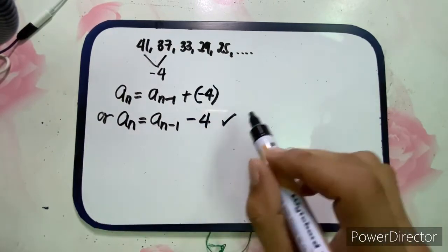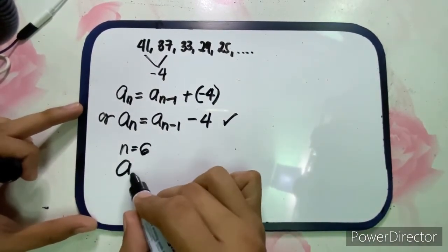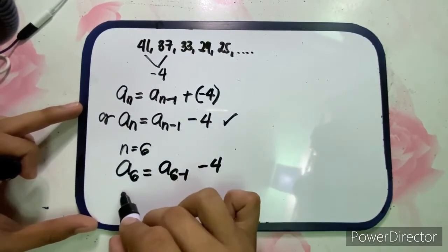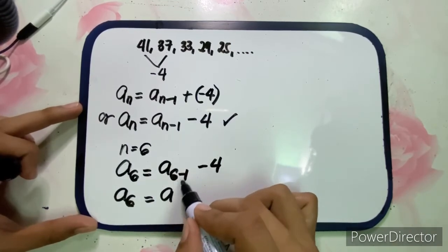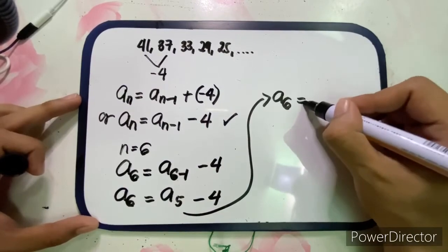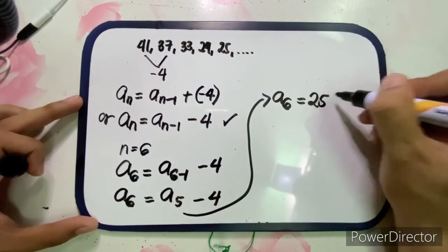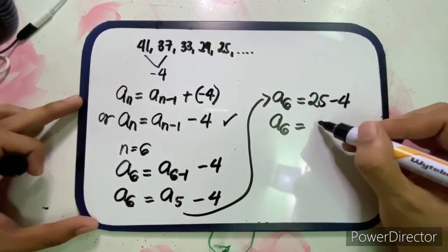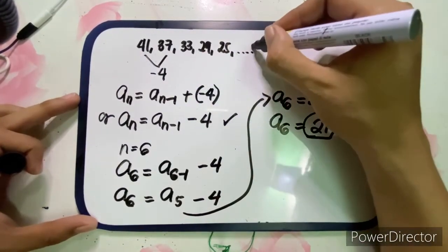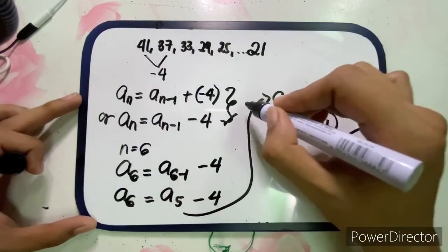To verify, we will find a sub 6. With n equal to 6, a sub 6 equals a sub (6 minus 1) minus 4, which is a sub 5 minus 4. The fifth term is 25, so 25 minus 4 equals 21. Therefore, a sub 6 equals 21. Since this is correct, our recursive formula for this third sequence is verified.